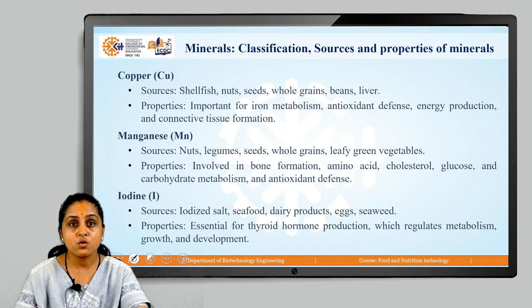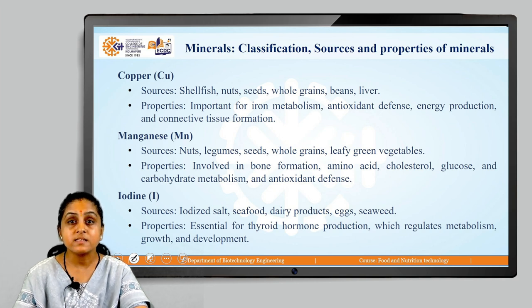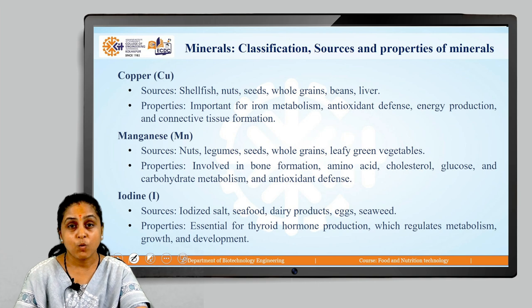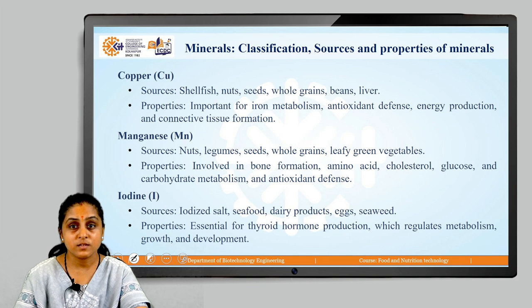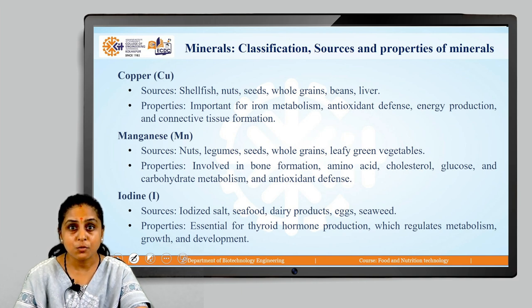Next is copper. Its sources are shellfish, nuts, seeds, whole grains, liver and beans. Properties of copper: it is important for iron metabolism, antioxidant defense, energy production and connective tissue formation.